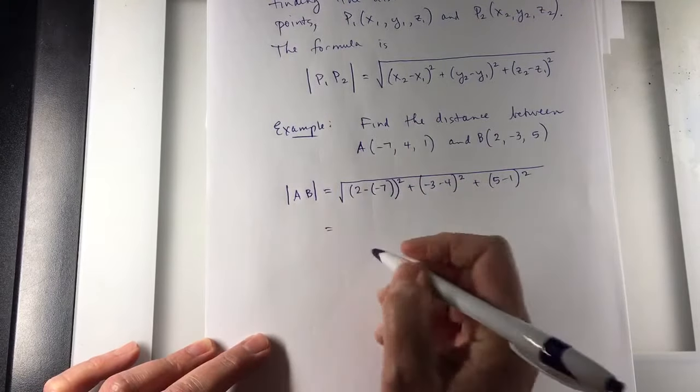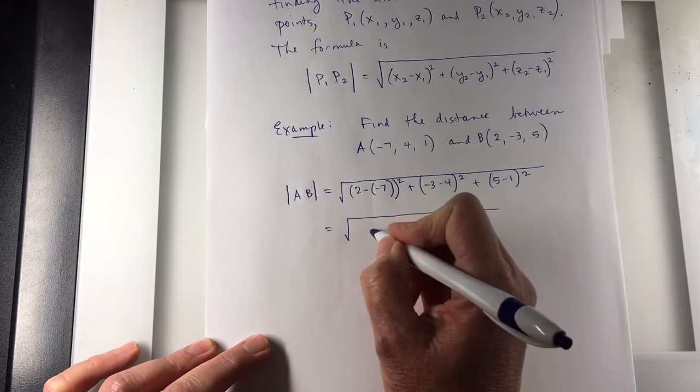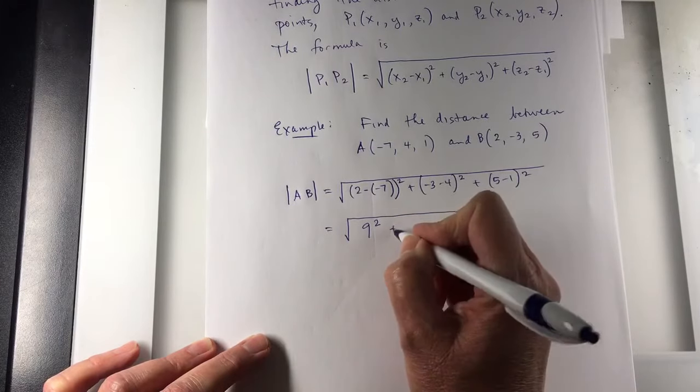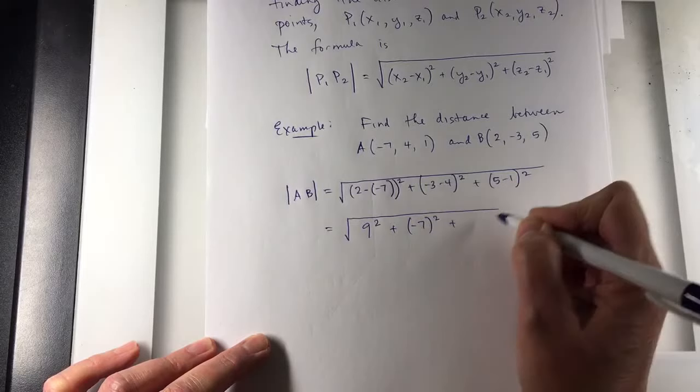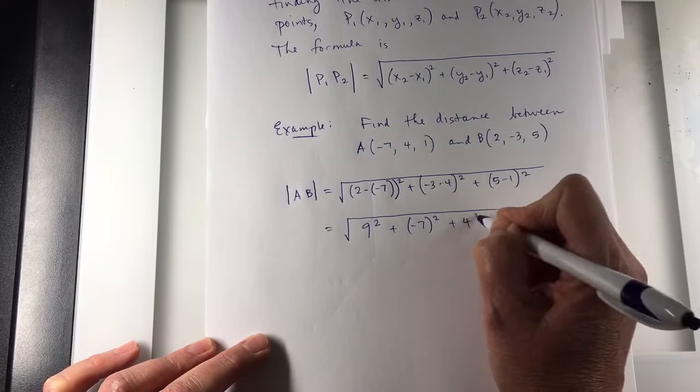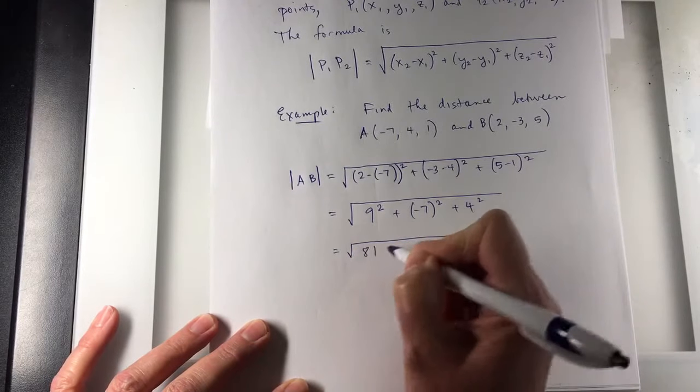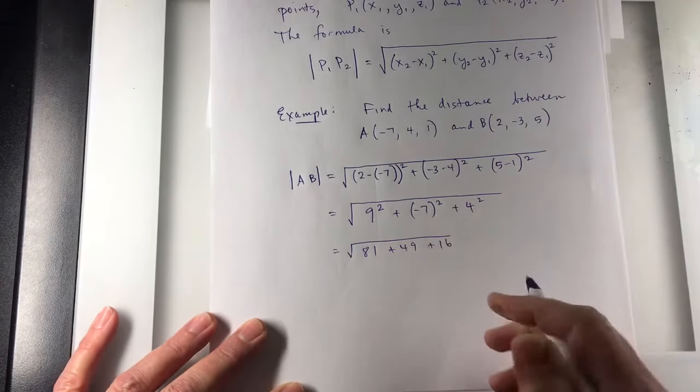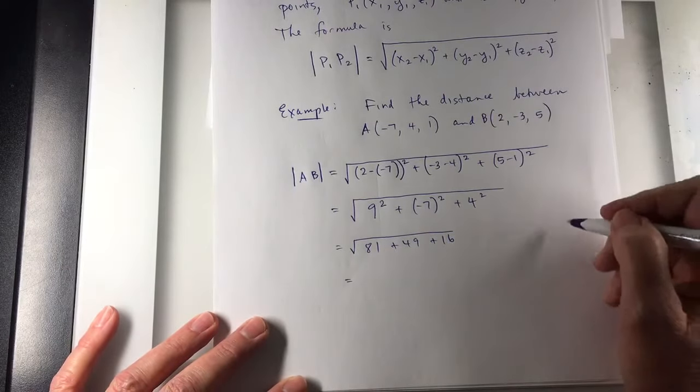And the square root of that sum. So 2 minus negative 7, that's going to be 9 squared. Negative 3 minus 4 is negative 7 squared. And then 5 minus 1, that's 4 squared. This is the square root of 81 plus 49 plus 16, and I did not bring my calculator today.